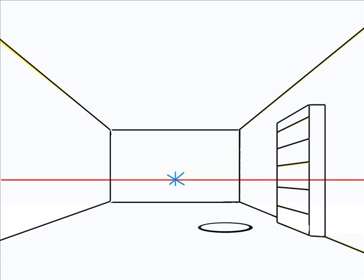Now I will draw a round top table. Things that are round become oval when they are in perspective.